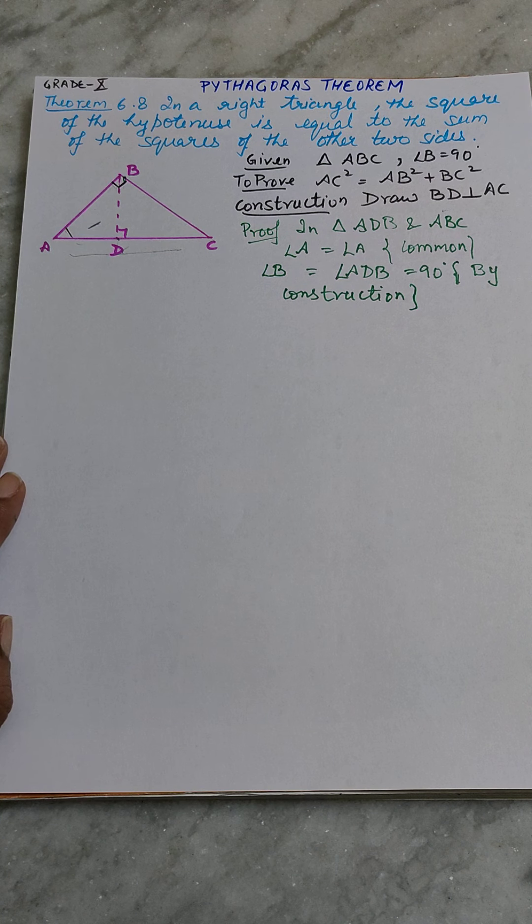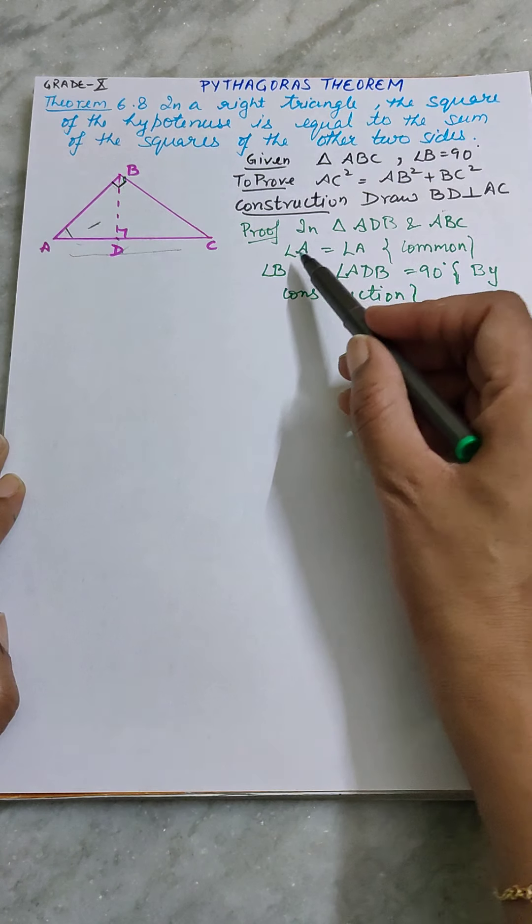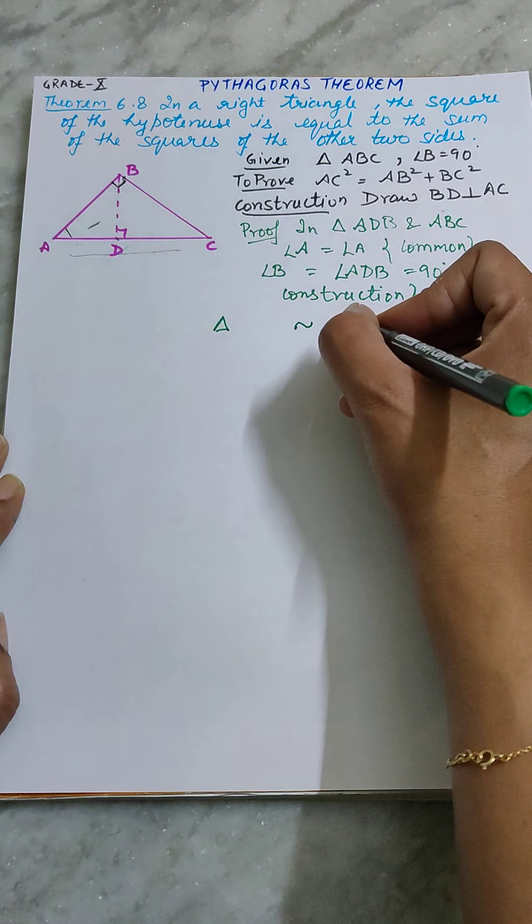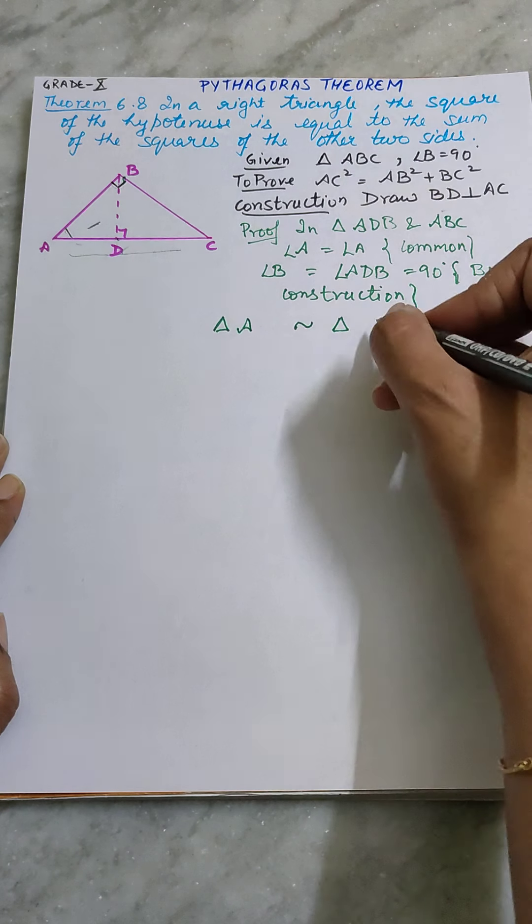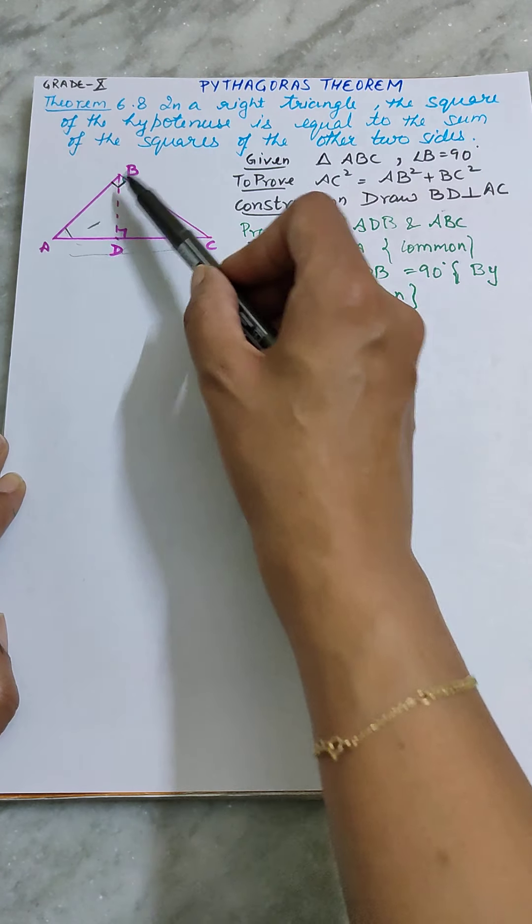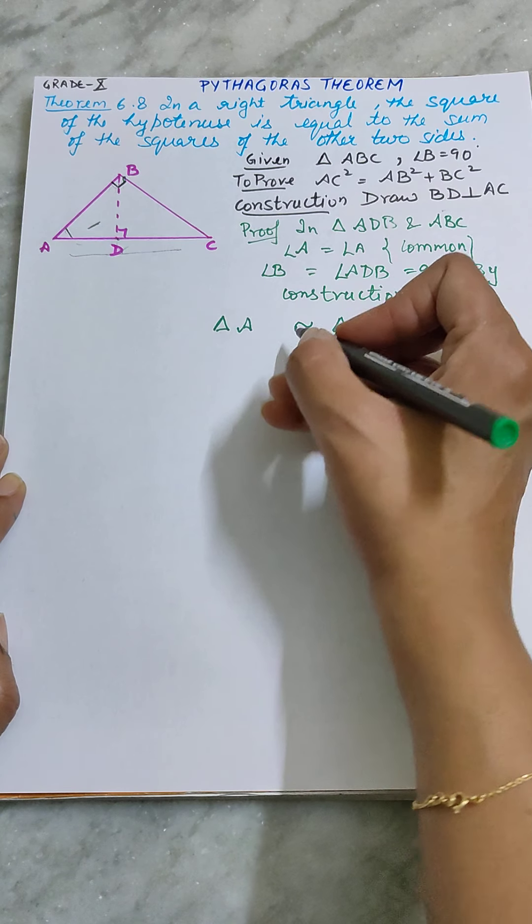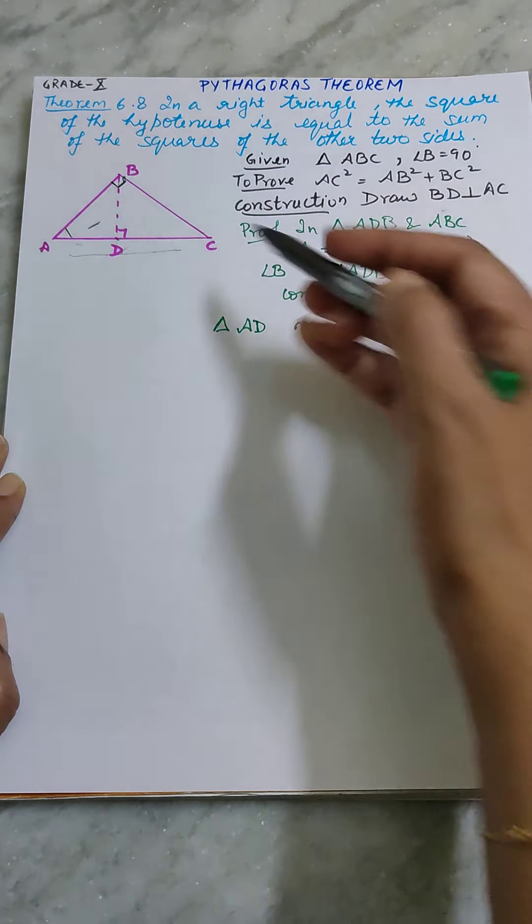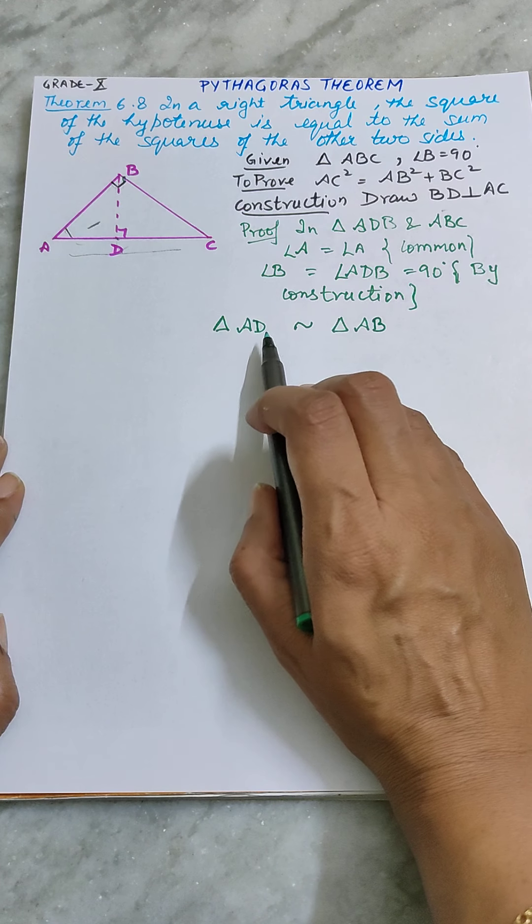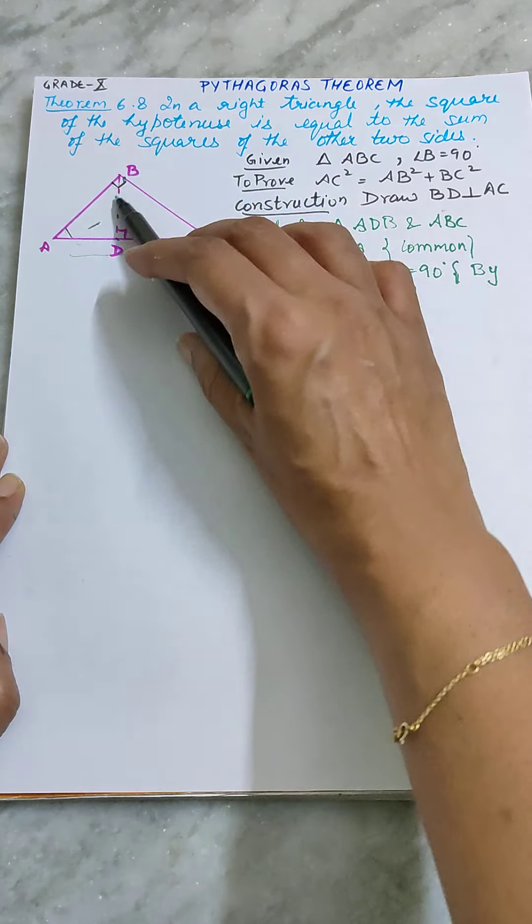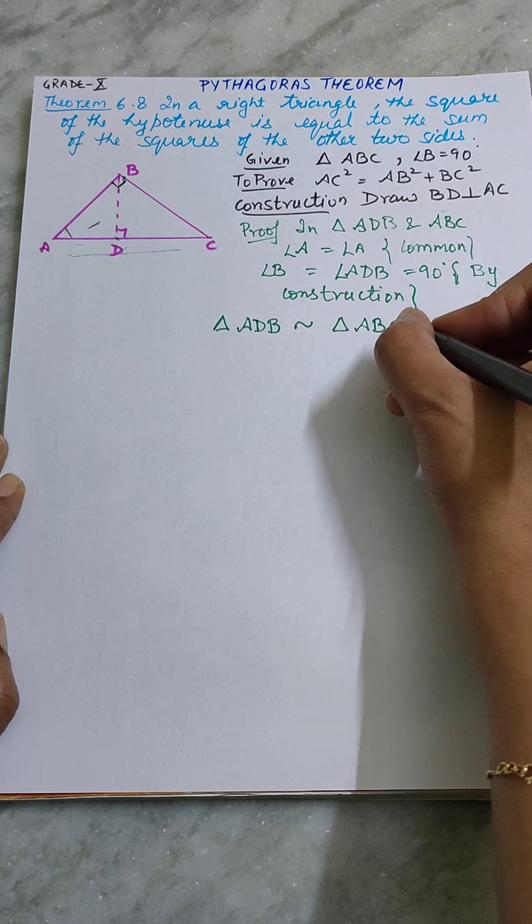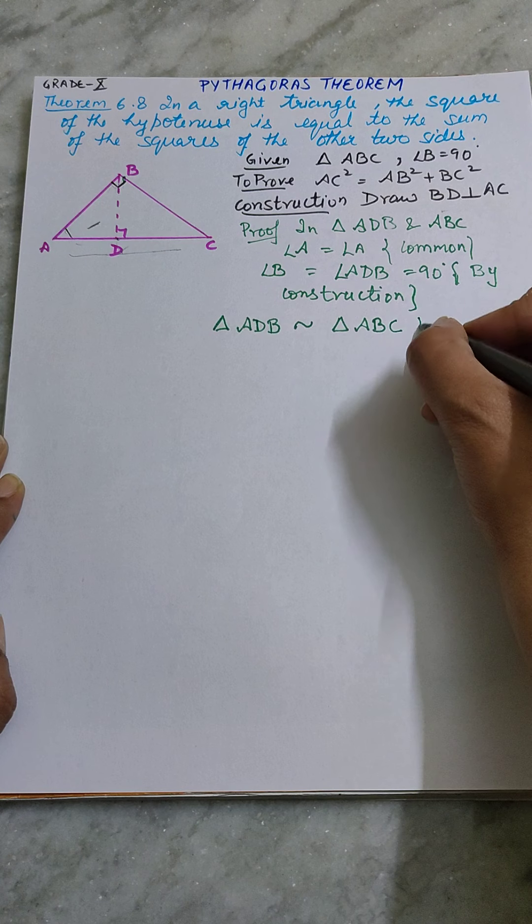Now aap similarity kaise likhenge? Sabse zyada important yaha pe yeh hai. Agar yaha A hai aur yaha A hai, toh aap triangle beech mein similar sign, then triangle, then A. Yaha bhi aap A likhi, kyunki dono hi equal the. Chote triangle mein, chote means ADB smaller triangle hai, waha pe D point pe 90 degree bana tha. Toh aap yaha D likhti chahiye. Bade wale triangle mein, bigger triangle mein, B pe 90 tha, toh aap yaha B likhti chahiye. Here I am considering smaller triangle. A, D ho gaya, obviously you are left with B alphabet. Aur A, B ke baad, bigger triangle mein aapka C. And then write down similarity by angle angle.